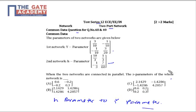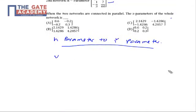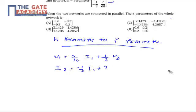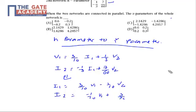We know that when two networks are connected in parallel, their Y parameters are simply the addition of each. Starting from the H parameter equations: v1 = (3/10)i1 + (1/3)v2, and i2 = -(1/3)i1 + (7/60)v2. Rewriting these: i1 = (3/20)v1 - (1/20)v2, and i2 = -(1/10)v1 + (3/20)v2.